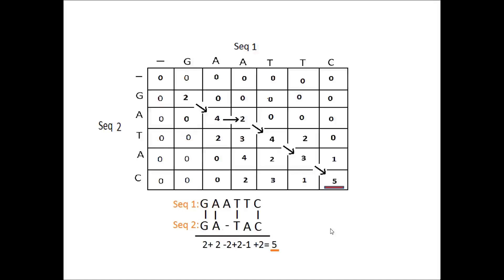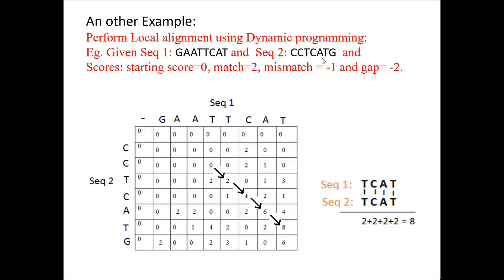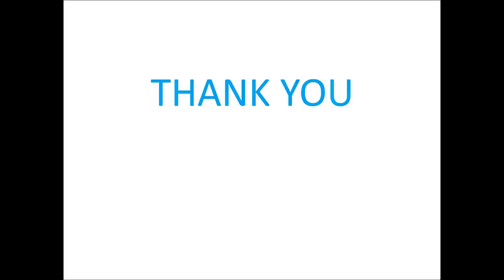Let's see local alignment with another example using the same scoring scheme. After filling the matrix with pointers and selecting the box with the highest value, backtracking gives a single path. When the sequences are aligned according to this path, only a small portion of the sequences are aligned — this is what we call local alignment. We have now seen how to do global alignment with the Needleman-Wunsch algorithm and local alignment with the Smith-Waterman algorithm.